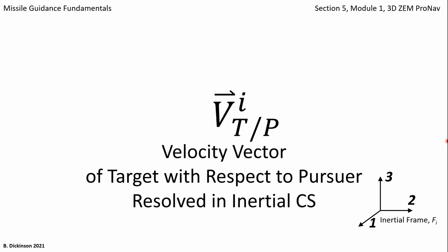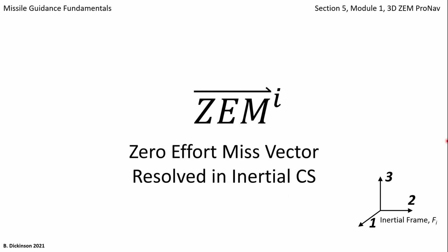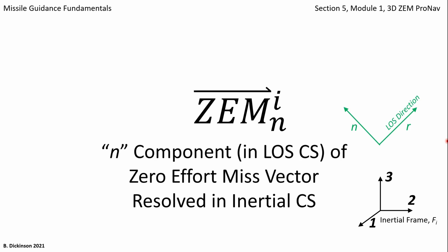This is the relative velocity vector. ZEM is zero effort miss. A subscript n on the zero effort miss vector is the n component. In the previous modules, we talked about a line of sight coordinate system, where the R direction is along the line of sight and n is perpendicular to that direction. So this would be the zero effort miss component along the normal direction to the line of sight, but resolved in the inertial coordinate system.